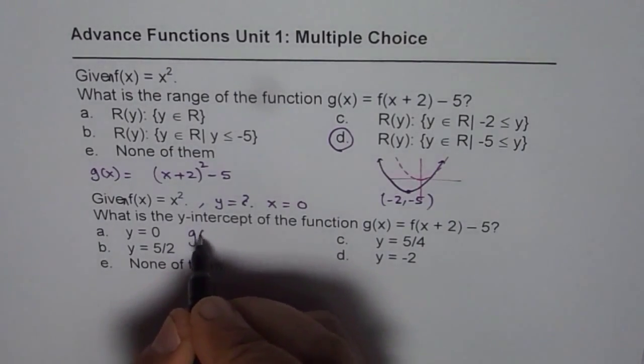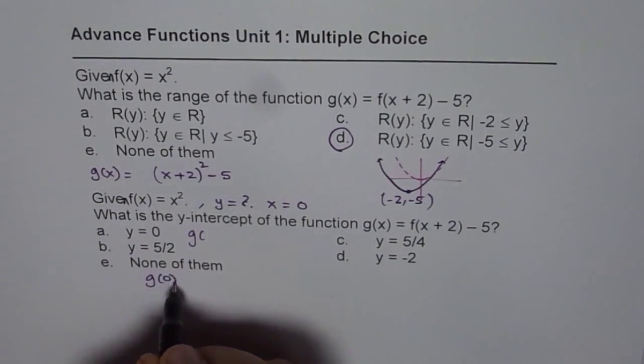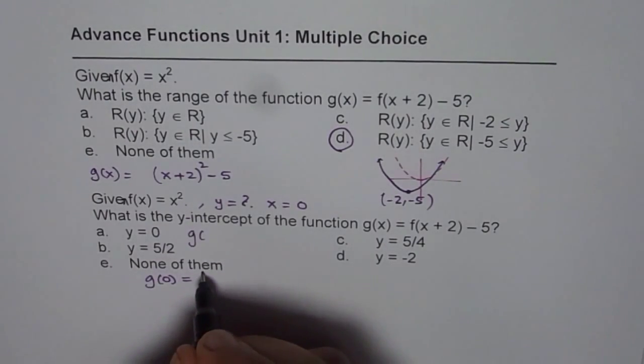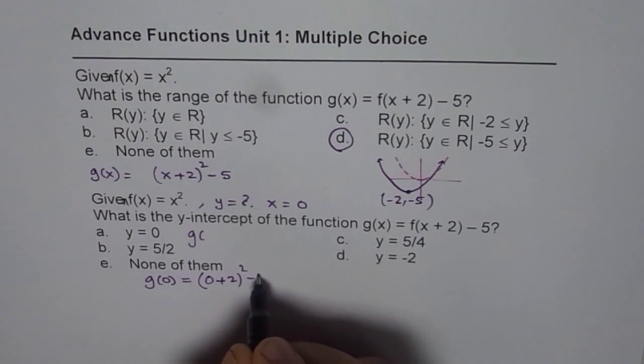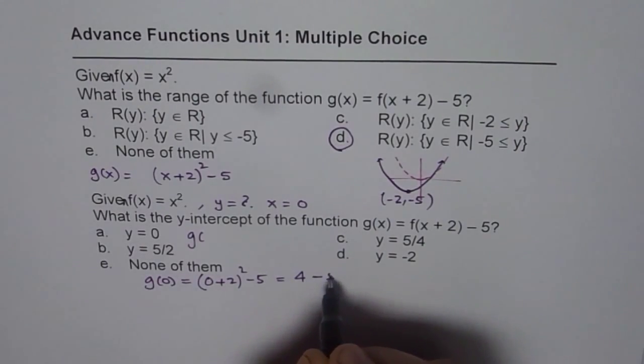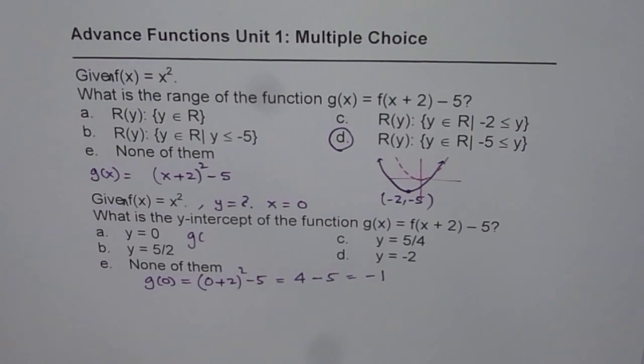So, basically, let me write here, g(0) will be equals to, let's substitute 0 here. So, if I substitute 0, I get (0 + 2)² - 5, which is 4 - 5 or -1. So, that is the answer, -1.